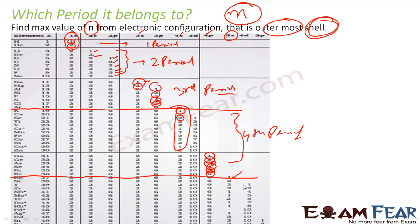From potassium to krypton we are in the fourth period. But when you go to rubidium, the outermost electron moves to the fifth shell — so rubidium onwards is the fifth period. The rule is simple: write the electronic configuration for any element and find the maximum value of n. That maximum value of n is the period of that element.